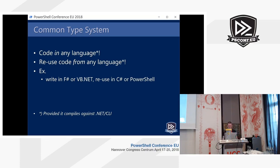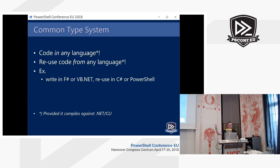For example, we could write some code in F#, which is not C#, and reuse that in C#, and then reuse all of this in PowerShell even though it was written in a bunch of different languages. So if you have a developer on your team who says 'I don't really like C#' or 'I don't want to code in your weird PowerShell scripting language', they can use F# or VB.NET and then run that in PowerShell. It's kind of nice, gives a bunch of flexibility.